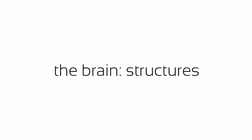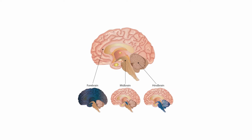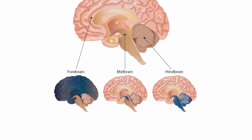We all have a brain, and we all use them in different ways, but they're all divided the same way — into the hindbrain, the midbrain, and the forebrain.